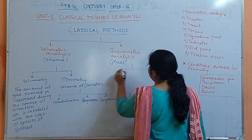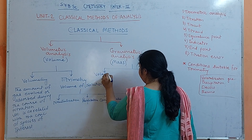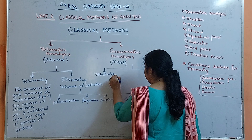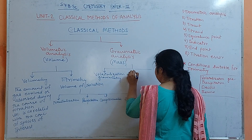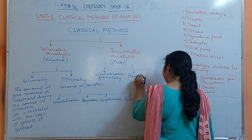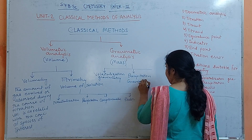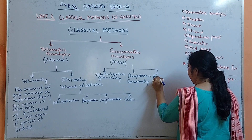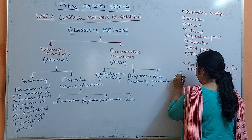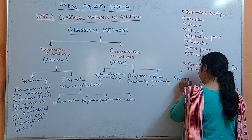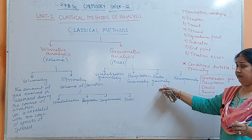Coming to the types of Gravimetry — we will see these in detail later, but let us know the types. The first one is Volatilization Gravimetry, the second is Precipitation Gravimetry, and then you have Electrogravimetry. We will cover these in the third or fourth lecture towards the end of the topic.